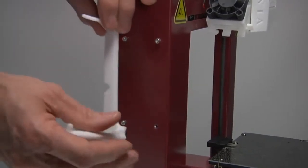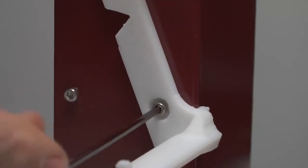Attaching the filament spool. Remove this screw, place the spool holder here, and replace the screw.